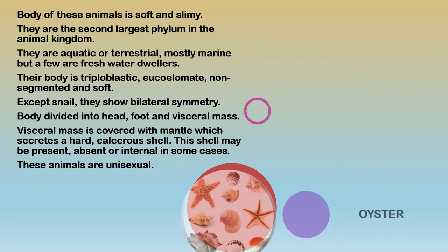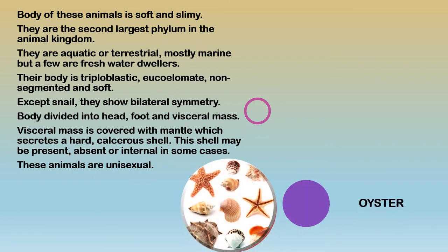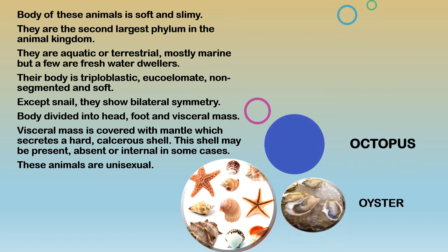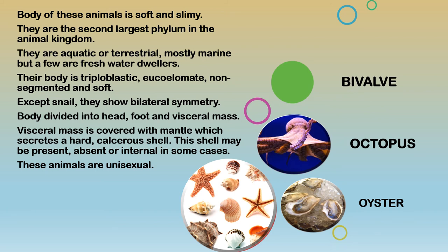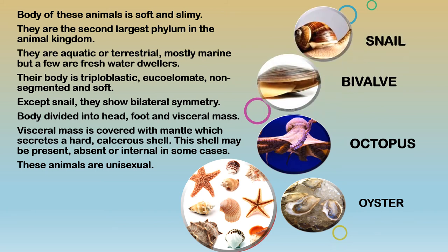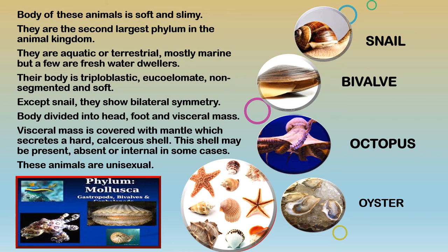Mollusca is the second largest phylum in the animal kingdom. The body of these animals is soft and slimy, as seen in the octopus, oyster, and snail. They are either aquatic or terrestrial; mostly living in seawater, but a few in freshwater. Their body is triploblastic, eucoelomate, non-segmented, and soft. All of them show bilateral symmetry except the snail.